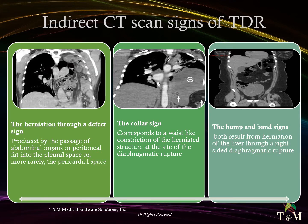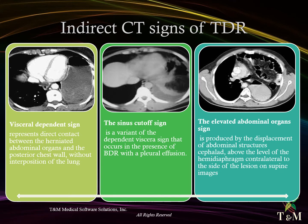Indirect CT scan signs of traumatic diaphragmatic rupture: the herniation through a defect sign is produced by the passage of abdominal organs or peritoneal fat into the pleural space, or more rarely the pericardial space. The collar sign corresponds to a waist-like constriction of the herniated structure at the site of diaphragmatic rupture. The hump and band signs both result from herniation of the liver through a right-sided diaphragmatic rupture. The dependent visceral sign represents direct contact between herniated abdominal organs and the posterior chest wall without interposition of the lung. The sinus cut-off sign is a variant of the dependent visceral sign occurring with pleural effusion. The elevated abdominal organ sign is present when abdominal structures are displaced cephalad above the level of the contralateral hemidiaphragm on supine images.